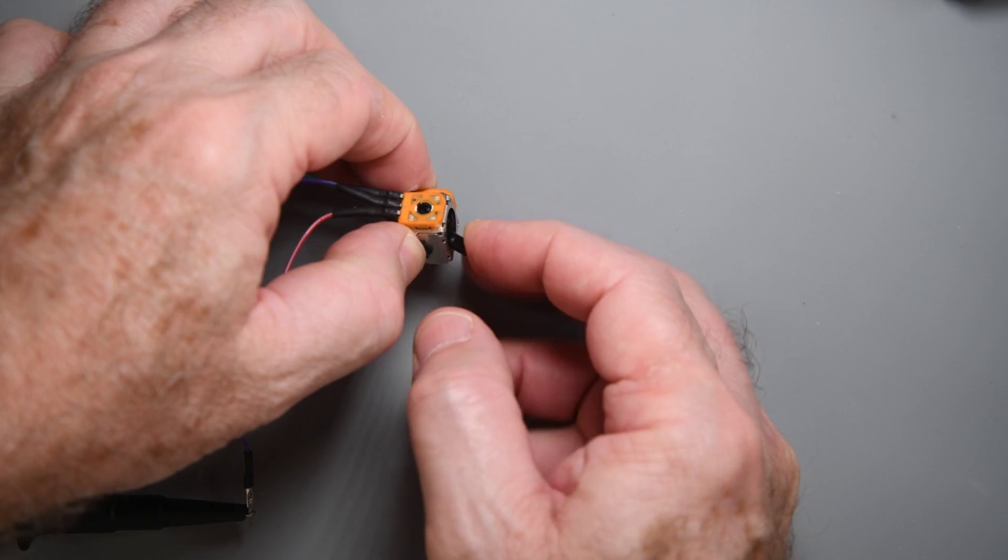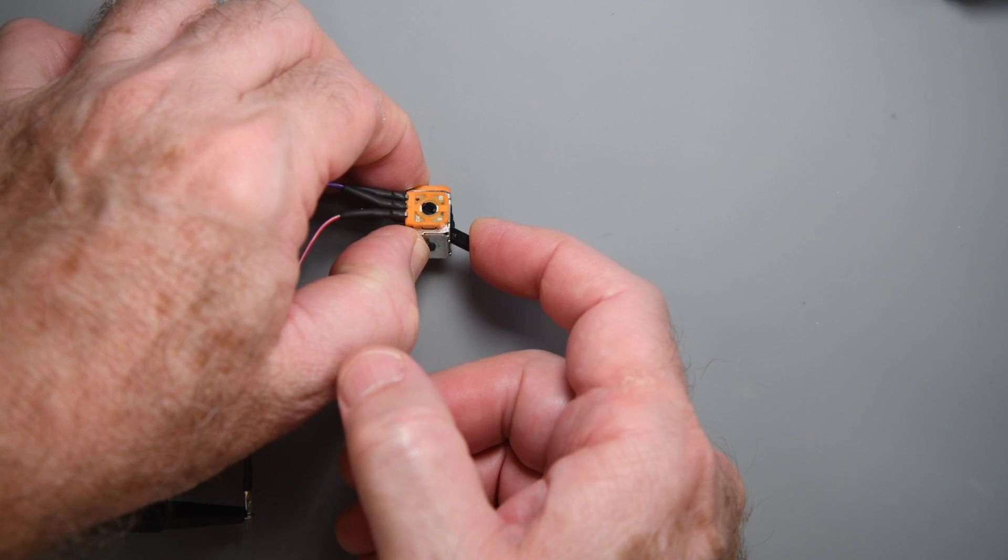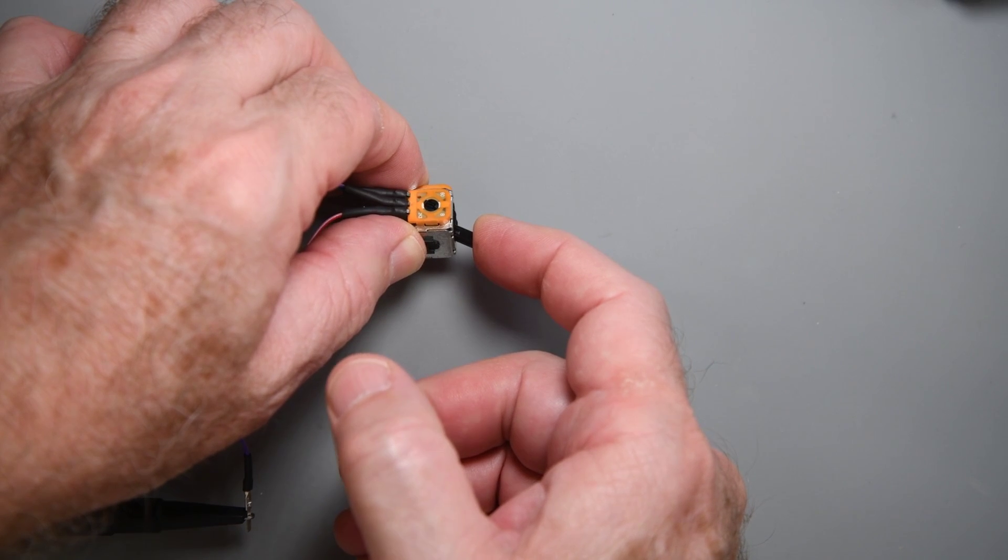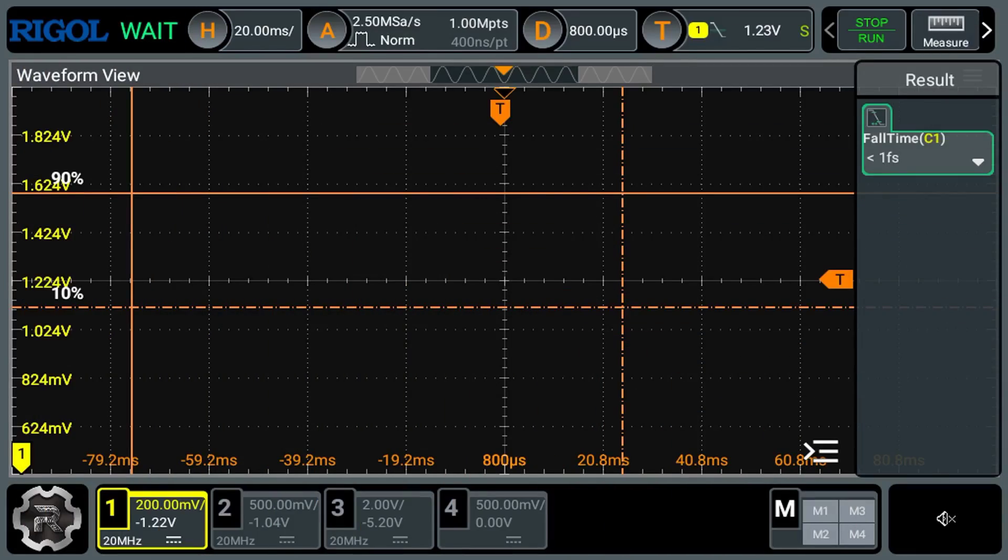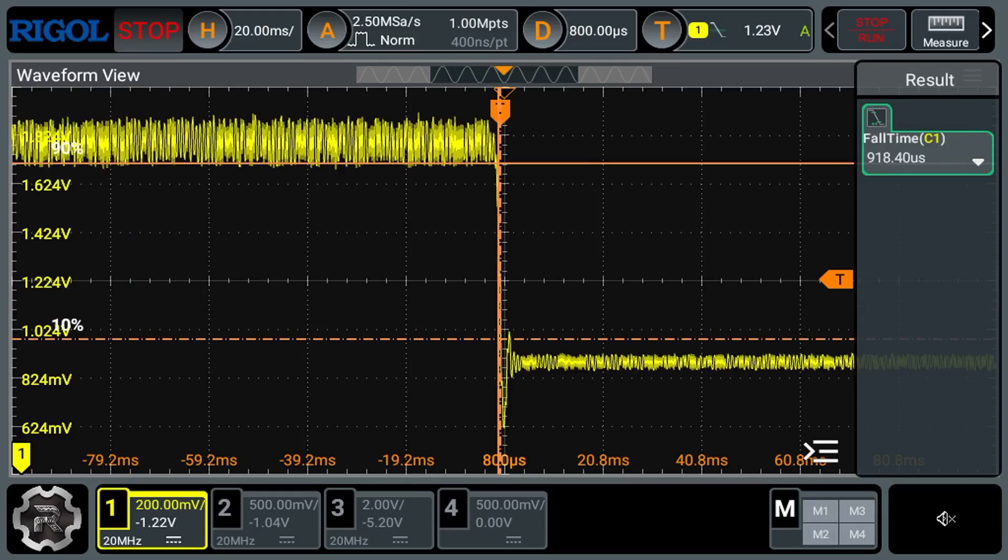And here is the reference, a favor union potentiometer joystick. This is the left right axis. You can see it is just under 1 millisecond.